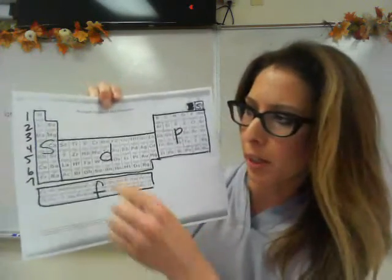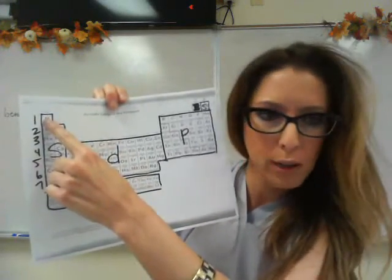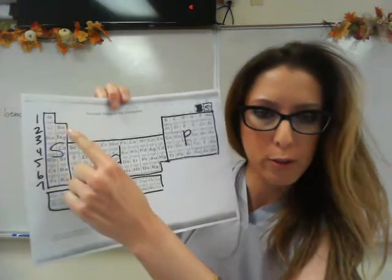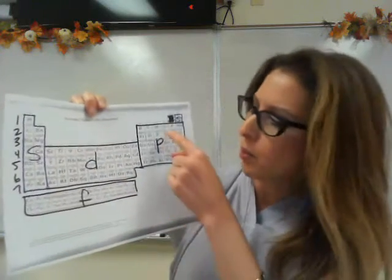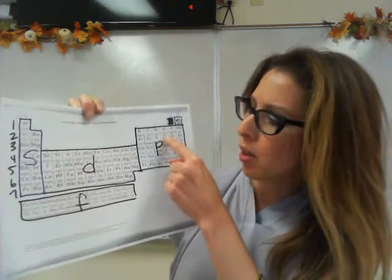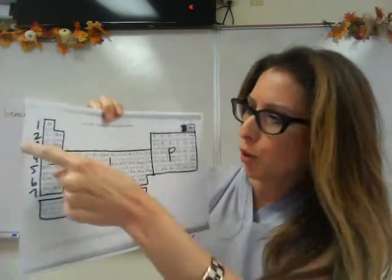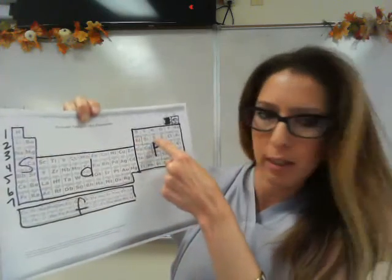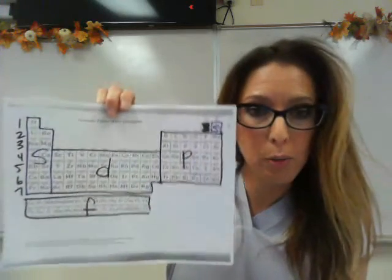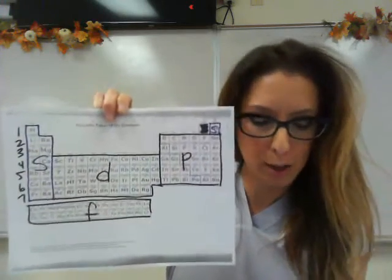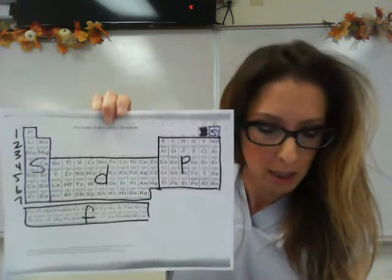The first example is hydrogen. Only 1S is filled with hydrogen, so you want to write down 1S. Sulfur ends on 3P, so 3P would be the highest energy sublevel.